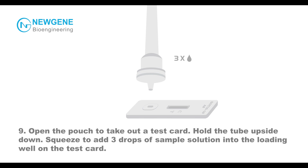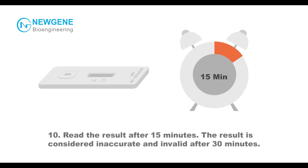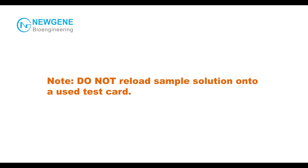Step 9: Open the pouch to take out a test card. Hold the tube upside down and squeeze to add 3 drops of sample solution into the loading well on the test card. Step 10: Read the results after 15 minutes. The result is considered inaccurate and invalid after 30 minutes. Do NOT reload sample solution onto a used test card.